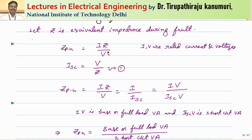Z per unit can be calculated as Z divided by Z base. Z base is nothing but voltage base divided by current base. Alternatively, Z per unit can be represented as I·Z divided by V, where I and V are the rated current and voltage. The short circuit current ISC equals the source voltage divided by the impedance up to the fault.